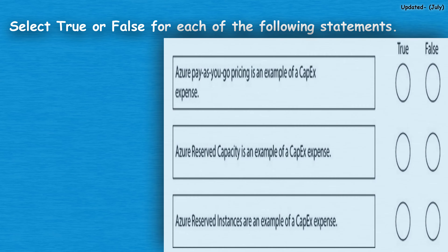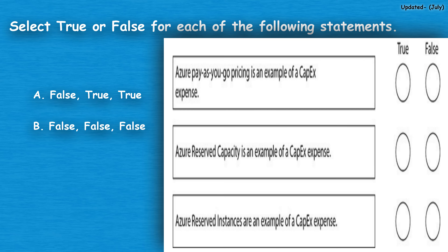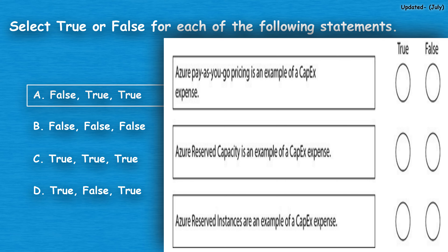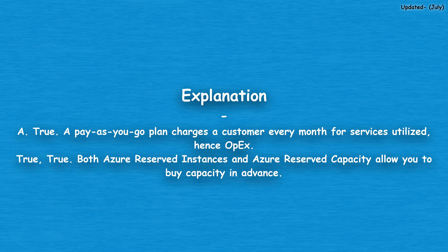The next question: select true or false for each of the following statements. Option A: false, true, true. Option B: false, false, false. Option C: true, true, true. Option D: true, false, true. The correct answer is option A: false, true, true. A pay-as-you-go plan charges a customer every month for services utilized, hence OpEx. True, true — both Azure reserved instances and Azure reserved capacity allow you to buy capacity in advance.